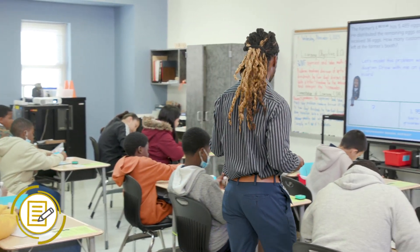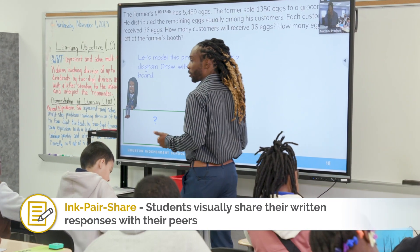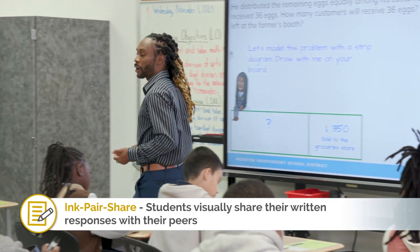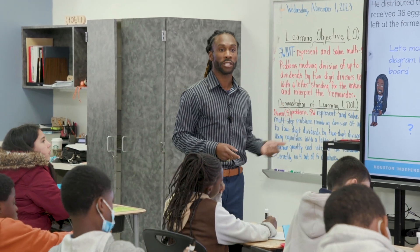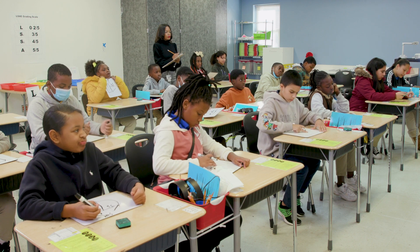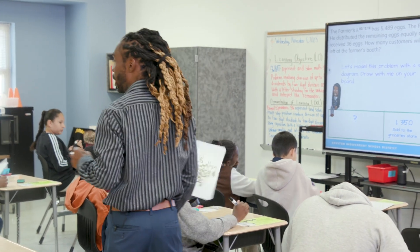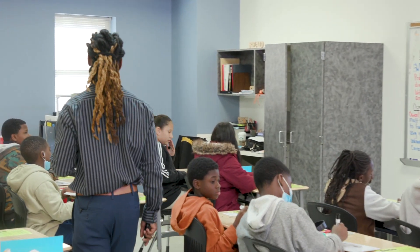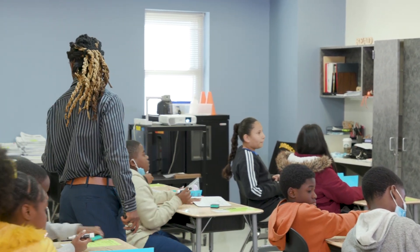Let's do an ink-pair-share. I'm going to give you 30 seconds to ink it. After 30 seconds, I want you to pair with your partner and share your strip diagram. You got four seconds. Two and one. We just inked. Now I want you to pair with your partner and share your thinking. What does my strip diagram look like? Go.